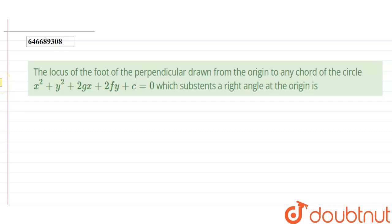Hi students, welcome to Doubtnut. So today we have to solve this problem. The locus of the foot of the perpendicular drawn from the origin to any chord of the circle x square plus y square plus 2gx plus 2fy plus c equals 0 which subtends a right angle at the origin.